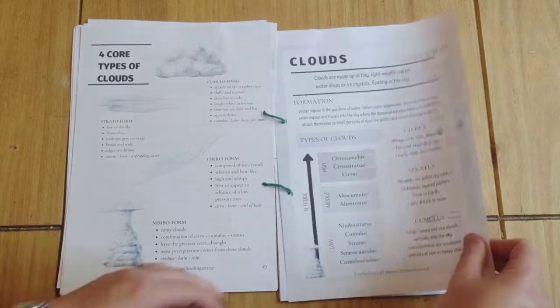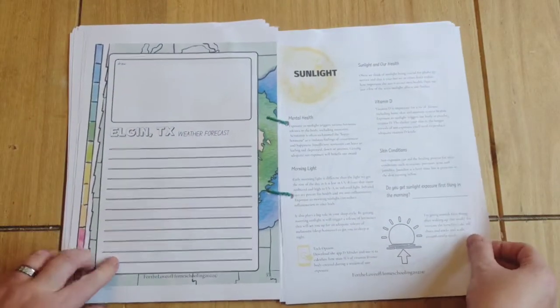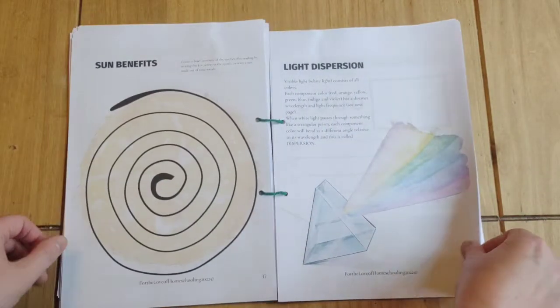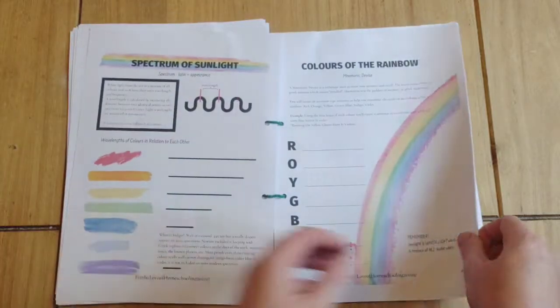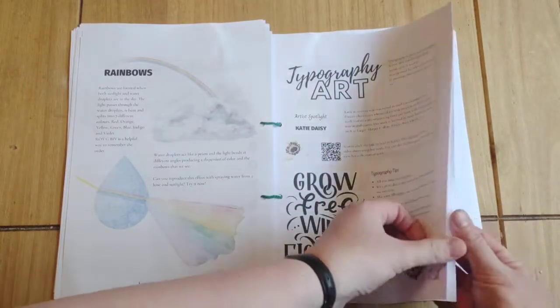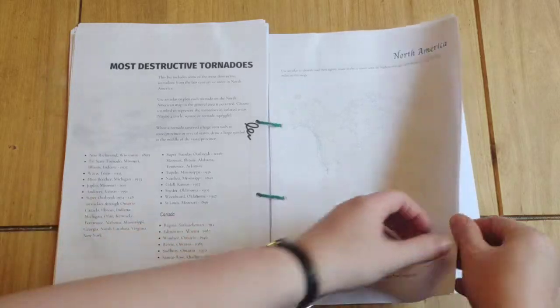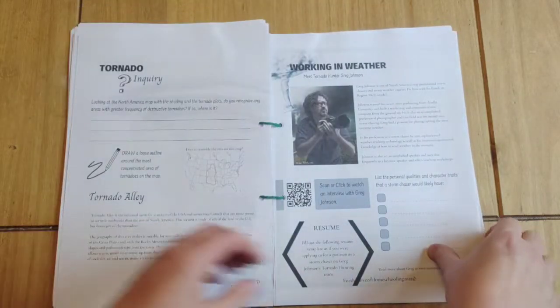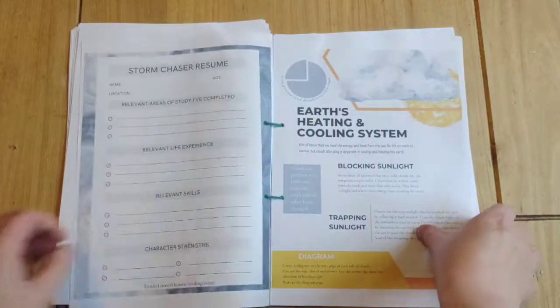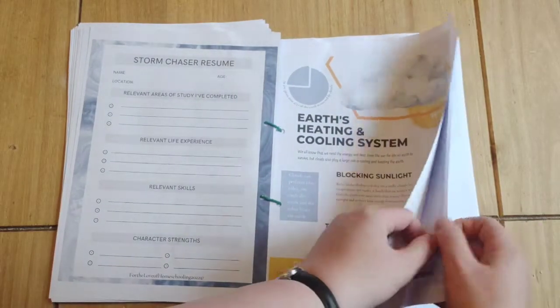Four core types of clouds, reading weather radar, weather forecast, light dispersion, typography art. They're doing a bit of their own there. Planet in Week, tornadoes, storm chaser resume that they have to write out.